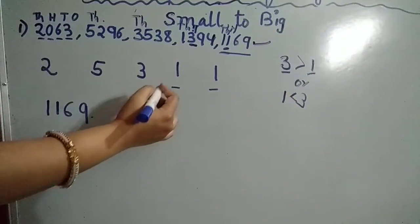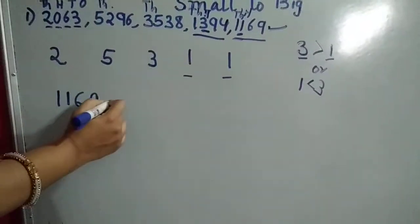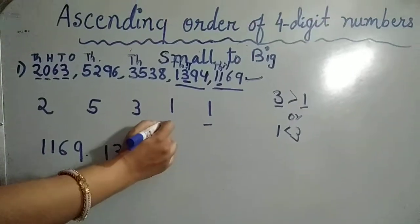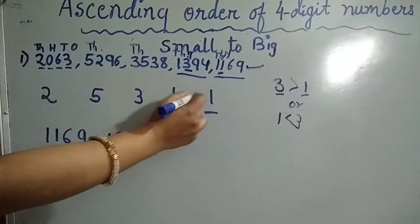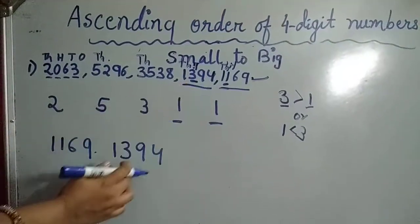Then the next biggest number is 1394. Both numbers in the thousands place start with one. So if this is the smallest, the next biggest is 1394.